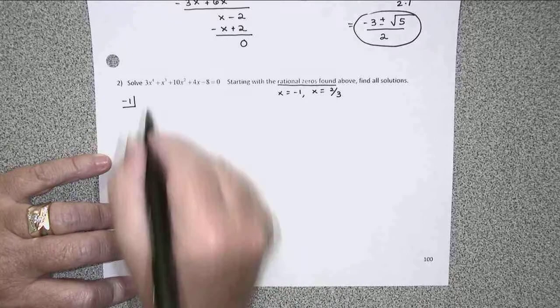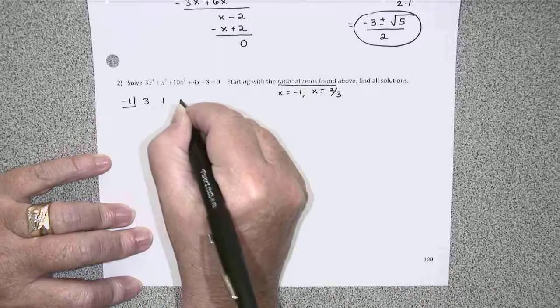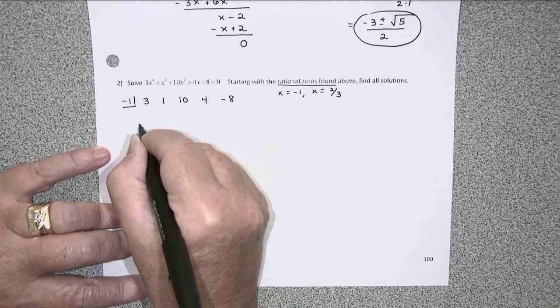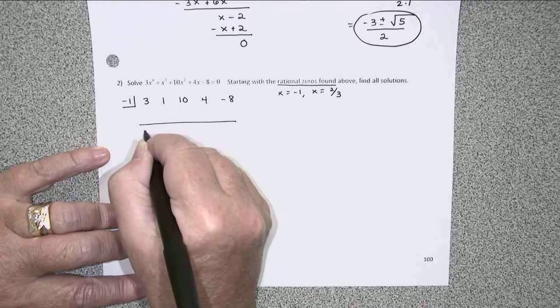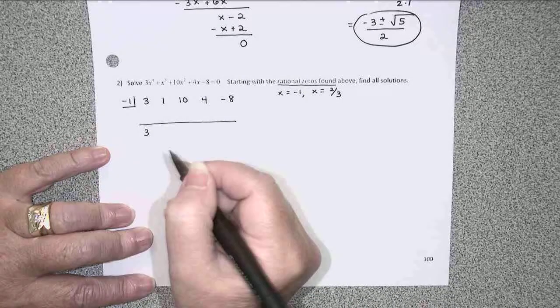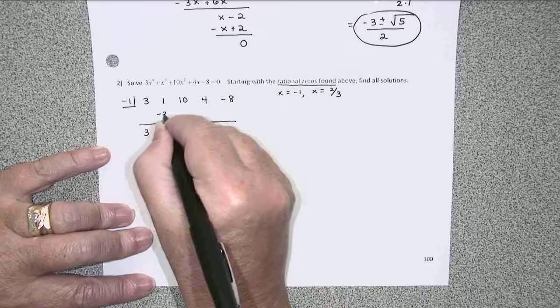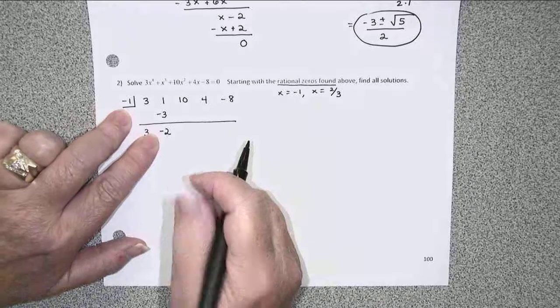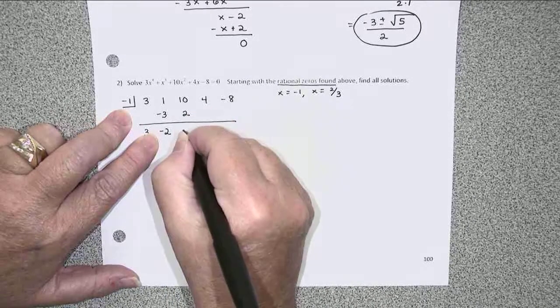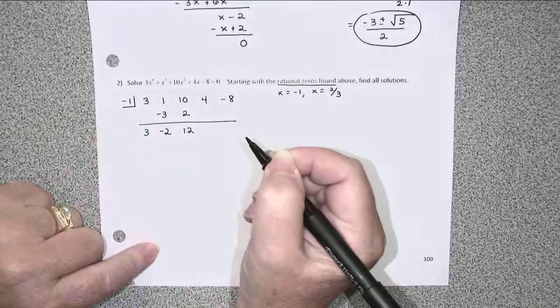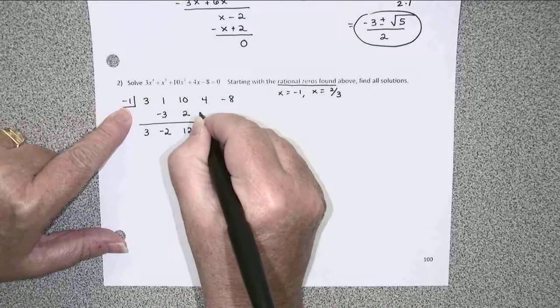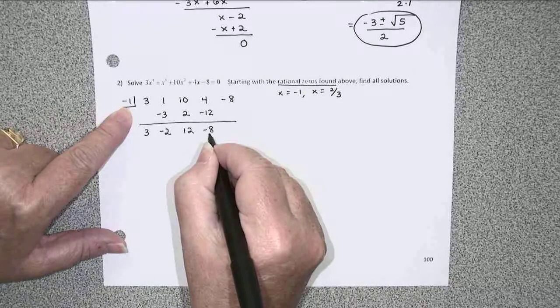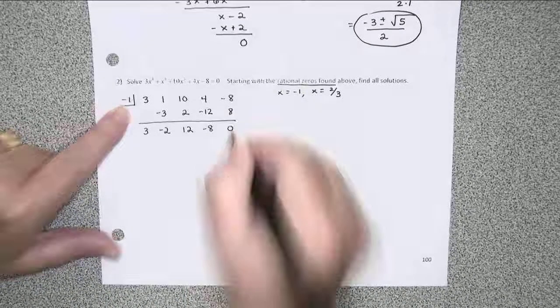I'm going to use that negative 1 by synthetic division. And I have 3, 1, 10, 4, and negative 8 are my coefficients. Bring down the 3, and then let's multiply and add. Multiply to negative 3, add them to get negative 2. Multiply here, that's positive 2, add them to get 12. Multiply to negative 12, add to negative 8, and multiply to positive 8, add to get 0.